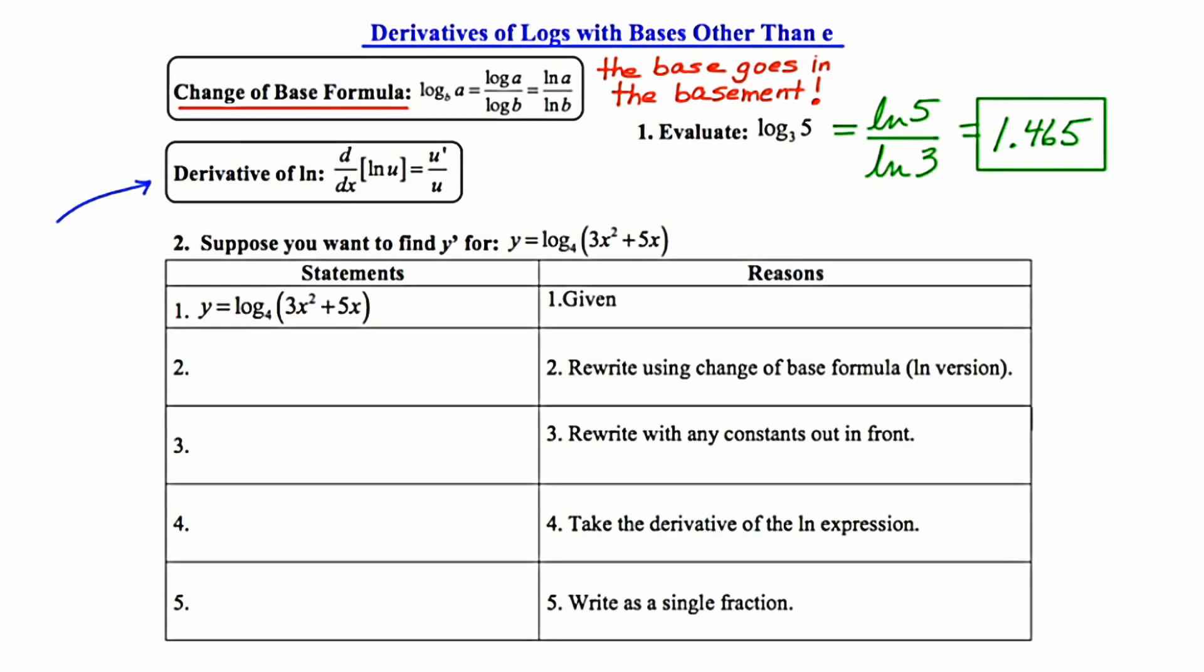Let's take a look at example 2. Suppose you wanted to find the derivative for y equals the log of 3x squared plus 5x base 4. Now I've set the solution up to this problem like it's a two column proof from geometry. And what's nice about this setup is that I've provided for you the reason for each step. So number 1 is just a restatement of the problem, and I'm calling that the given.